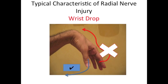One of the typical characteristics of a radial nerve injury is a wrist drop. The patient would be able to flex the wrist, which is the blue arrow, but he will either have difficulty or paralysis in extending his wrist, which is the red arrow.